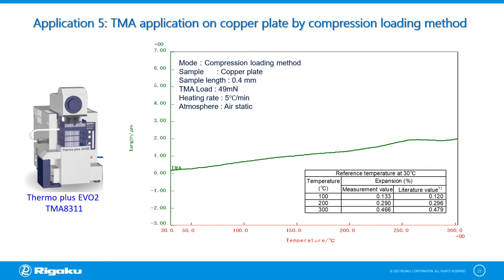This figure shows the TMA compression loading measurement result of copper plates on 400 micrometer thickness direction. In samples that have minute expansion, the differential type compression loading method is effective. Comparing the expansion results of this sample to the literature values at the base temperature of 30 degrees, the measurement expansion results are within 10 percent.